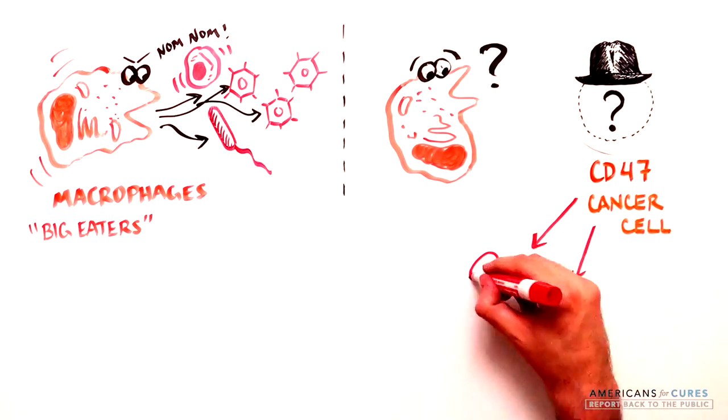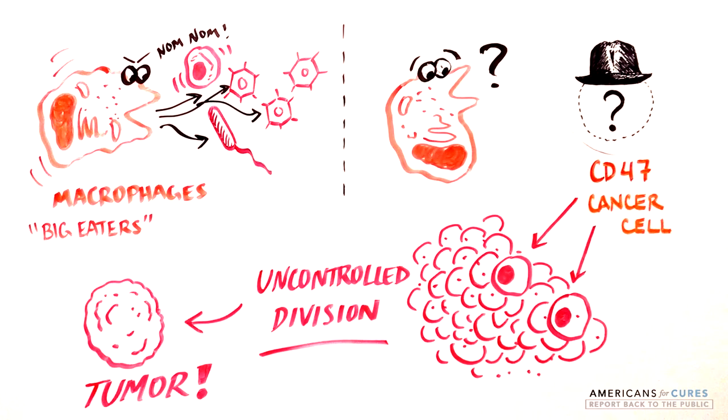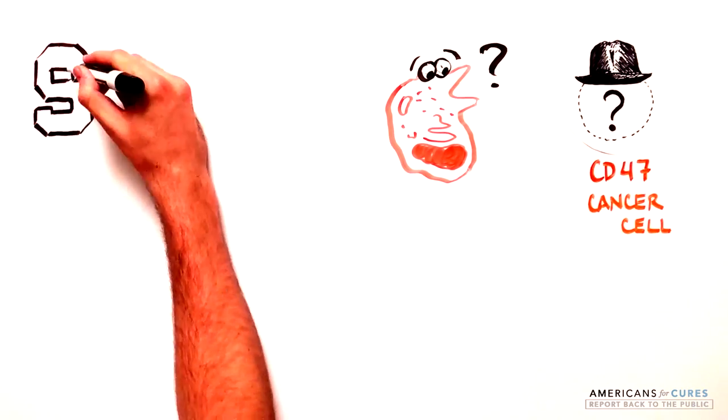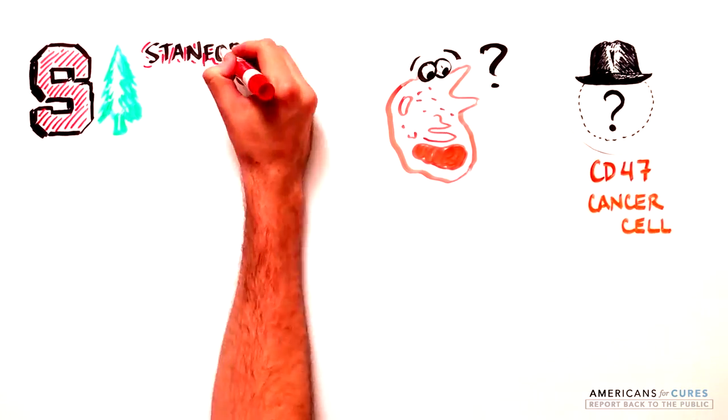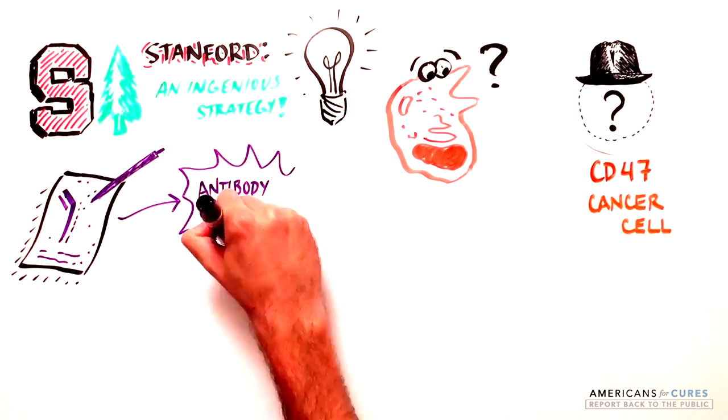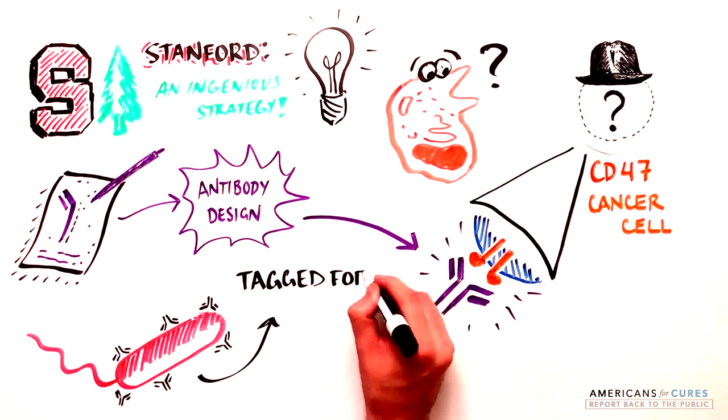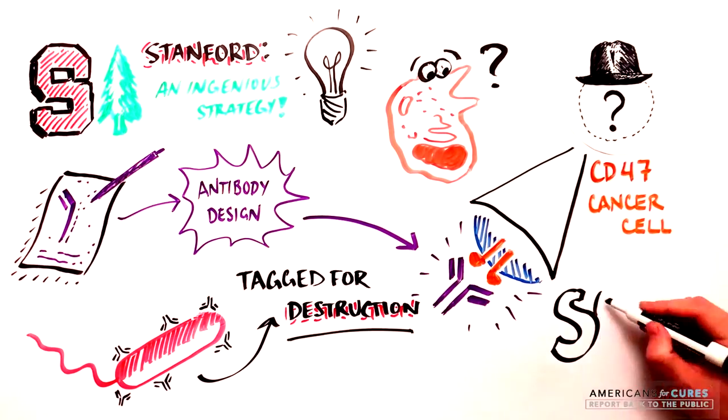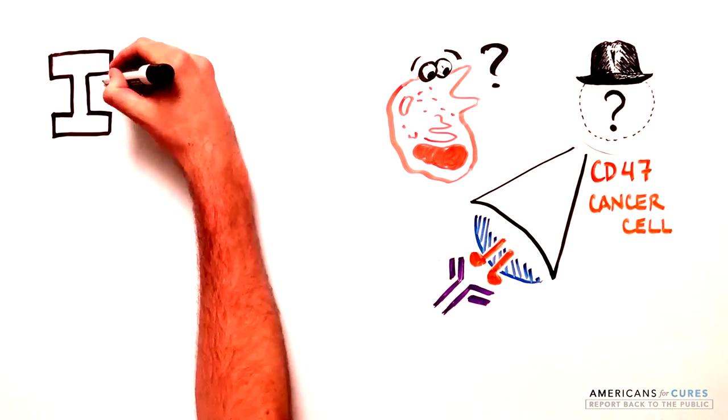To repeal the invisibility cloak and make cancer cells vulnerable to the immune system, scientists at Stanford University devised an ingenious strategy. They designed an antibody that can bind to CD47 and disrupt the invisibility cloak. Antibodies bind and identify material to be destroyed. So what did these scientists have in mind with this CD47 antibody? Here is their idea.